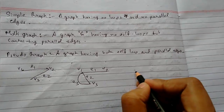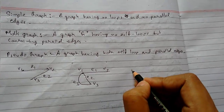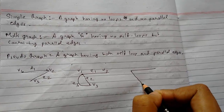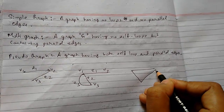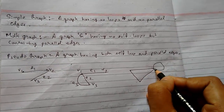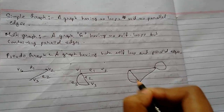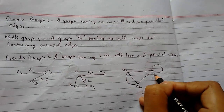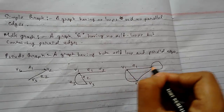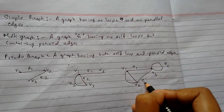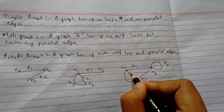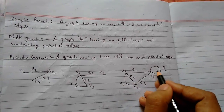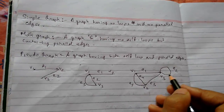Pseudograph: a graph that has both self-loops and parallel edges. For example, vertices V1, V2, V3 with edges E1, E2, E3, E4, E5, where some are parallel edges and one is a self-loop.